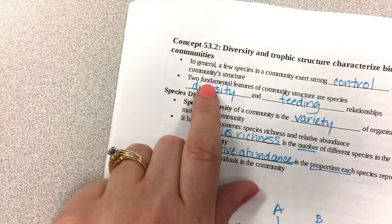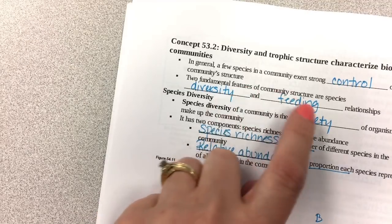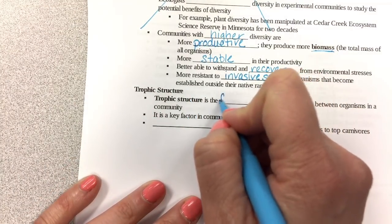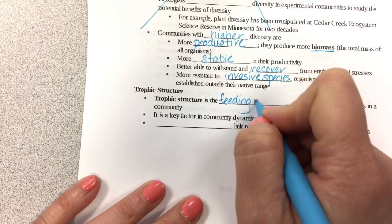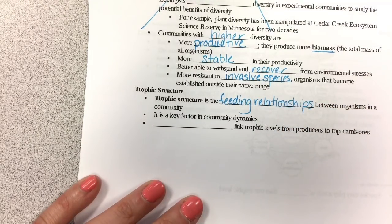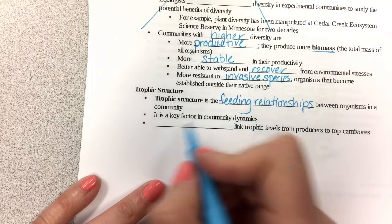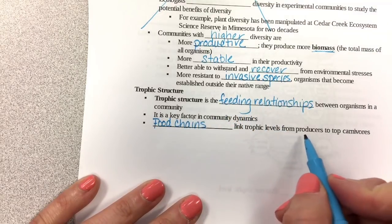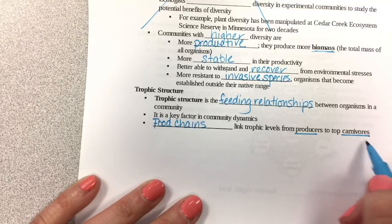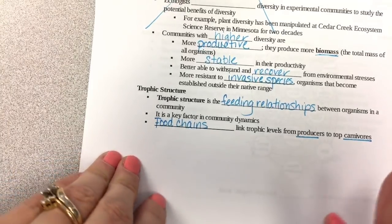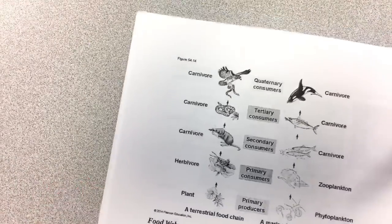The second feature of community structure is feeding relationships, which we call trophic structure — the feeding relationships between organisms in the community. It's a key factor in community dynamics. Food chains link trophic levels from producers to top carnivores. Producers make their own food, usually through photosynthesis. There are a few exceptions that produce food from chemicals, like on the bottom of the ocean where there's no sunlight.